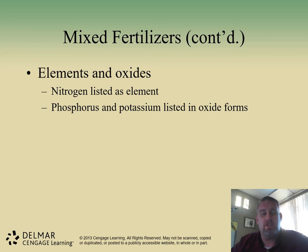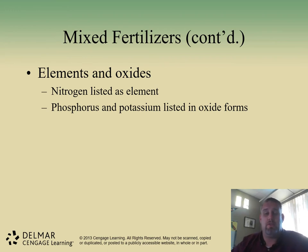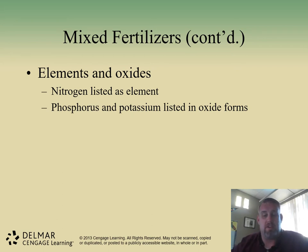Nitrogen is listed in its elemental form, whereas phosphorus and potassium are listed in their oxidized forms. These are how the plant materials are listed. So typically when you do some math, you have to take into account how much of that — for example, muriate of potash K₂O — has a little bit of oxygen in there. That could be a conversion where you're converting back to the amount of potassium that you're trying to put down.